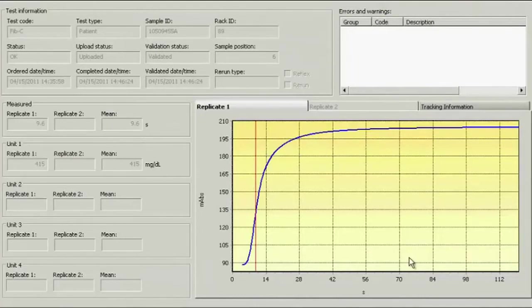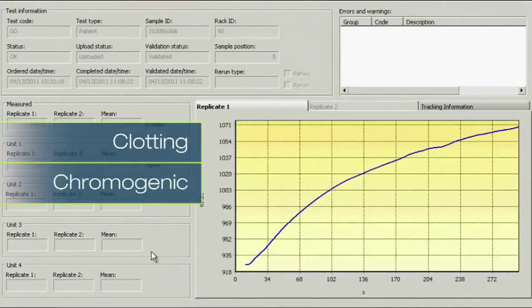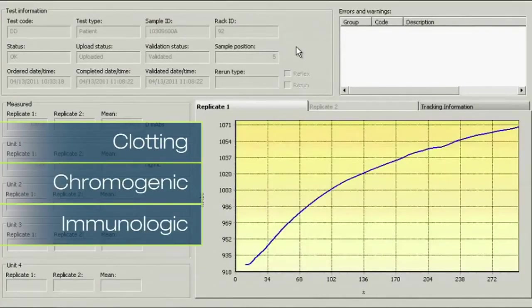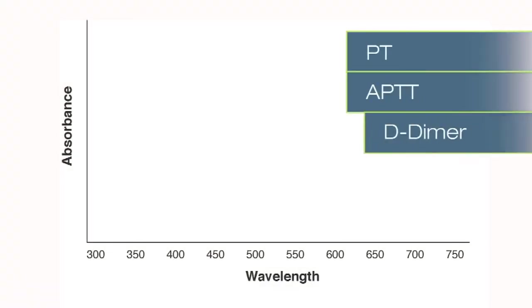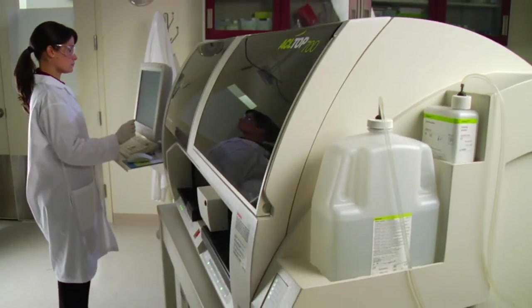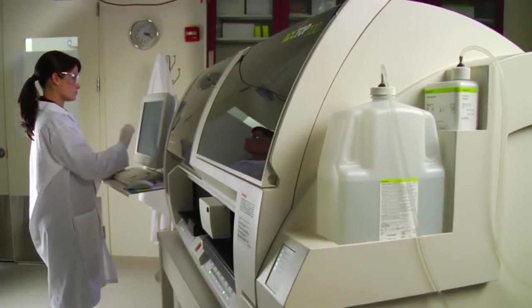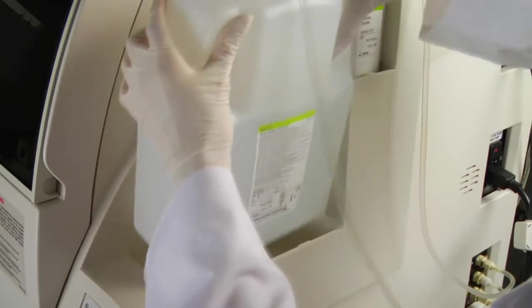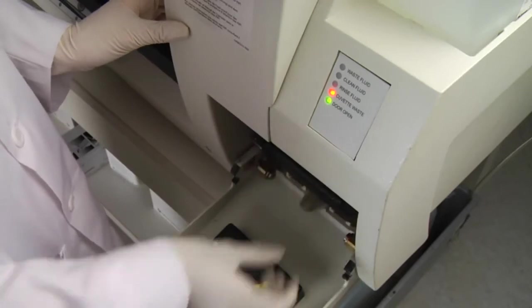Optical units simultaneously read clotting, chromogenic, and immunologic assays for optimal system throughput. For key assays, the ACL top reads at 671 nanometers outside the range of optical interferences. Bulk rinse and clean agents are kept on board to automate most routine maintenance functions. The systems are designed for fast and easy rinse bottle replacement, cuvette and liquid waste disposal.